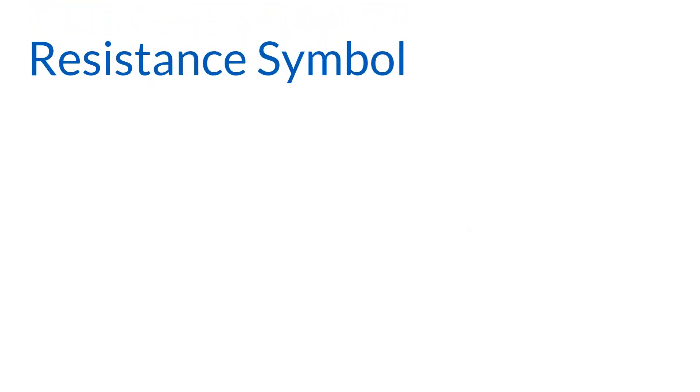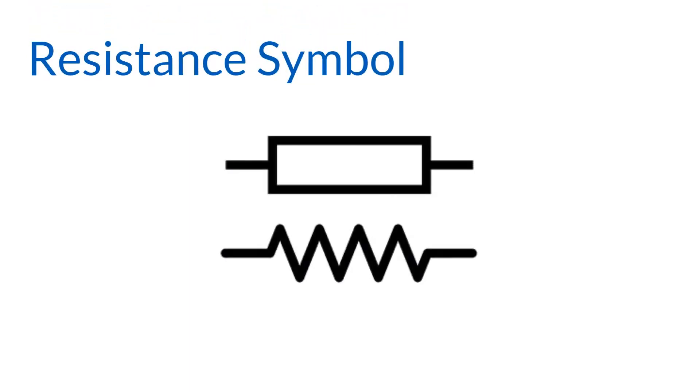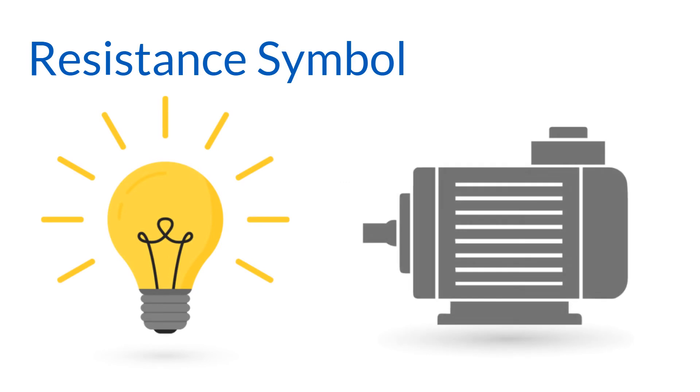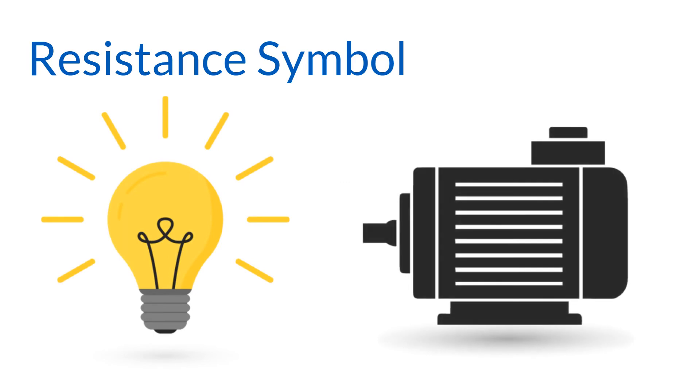Resistance is represented in one of two ways, either a rectangle or a zigzag line. Resistance in a circuit can take the form of many different components, from light bulbs to motors. Most of these components have their own unique symbols.